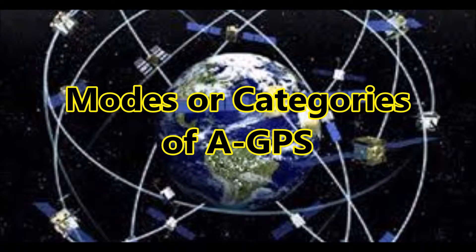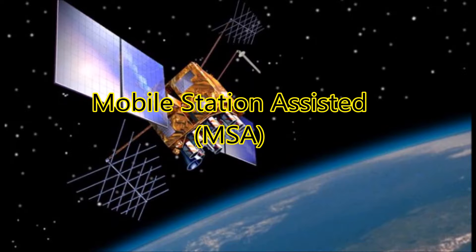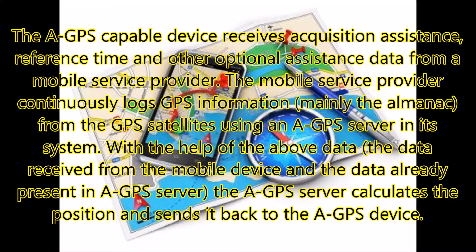Modes or Categories of AGPS. Mobile Station Assisted: The AGPS-capable device receives acquisition assistance, reference time, and other optional assistance data from a mobile service provider. The mobile service provider continuously logs GPS information, mainly the Almanac, from the GPS satellites using an AGPS server in its system. With the help of the above data, the data received from the mobile device, and the data already present in the AGPS server, the AGPS server calculates the position and sends it back to the AGPS device.